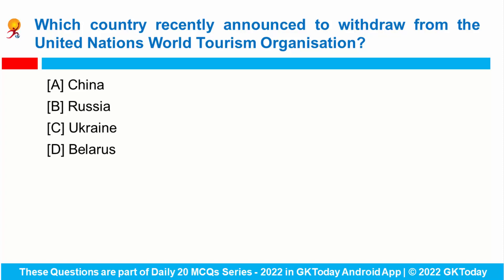Which country recently announced to withdraw from the United Nations World Tourism Organization? Russia has announced it has decided to withdraw from the Spain-based United Nations World Tourism Organization ahead of a scheduled vote on their suspension. Despite the withdrawal, UNWTO made clear that they will go ahead with the suspension due to the ongoing invasion of Ukraine. The process of excluding Russia from the body will take around one year to finish completely.